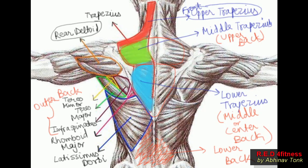So the major classifications of back muscles in terms of bodybuilding are: first, upper back; second, middle or center back; third, lower back; fourth, outer back; fifth, latissimus dorsi or lats muscles; and the last one is rhomboid muscles, which divides into rhomboid major and rhomboid minor. This concludes the anatomy of back muscles and their classification in terms of bodybuilding.